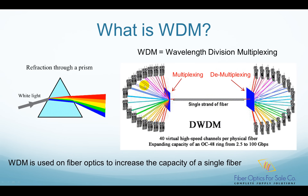As shown in the picture on the right, in a WDM system, many different colored lights are combined by a WDM multiplexing device and put into a single strand of fiber. Each color is called a channel. On the receiving side, each color is separated into its own channel by a WDM demultiplexing device. A single fiber's capacity is increased by 40 times with the 40-channel WDM.